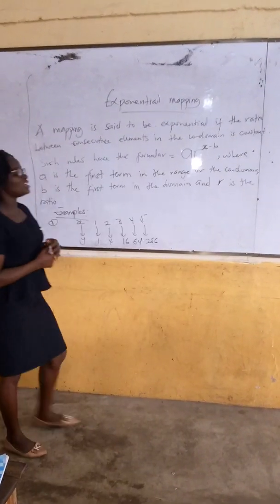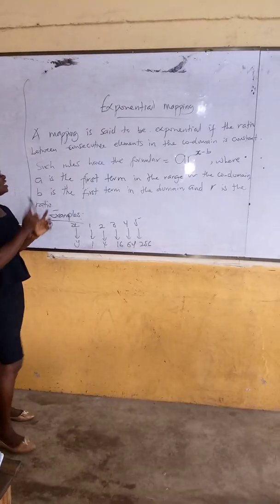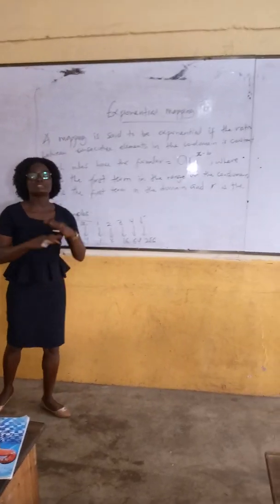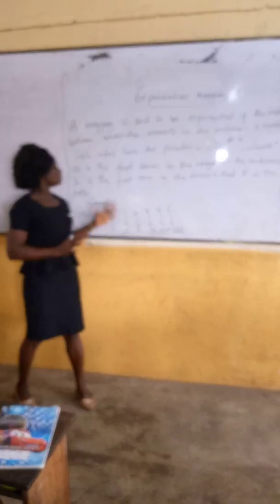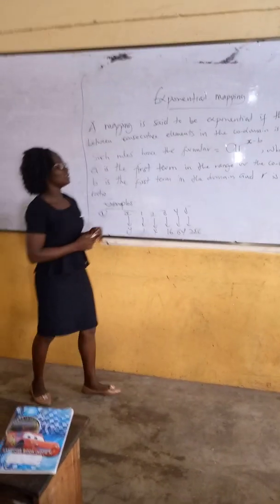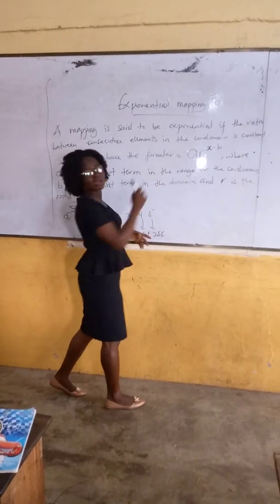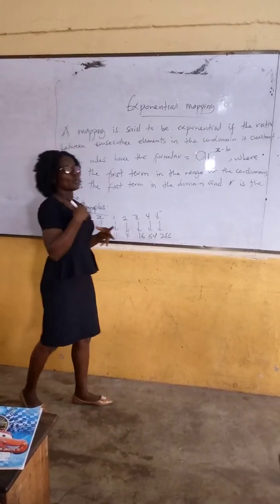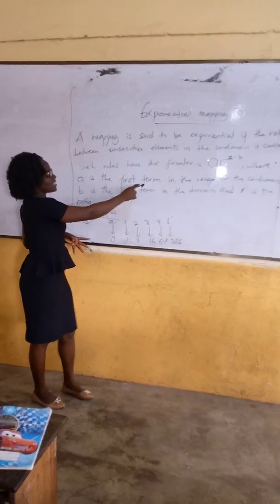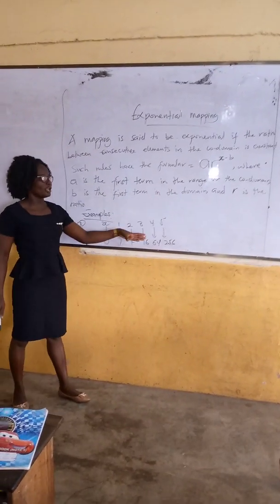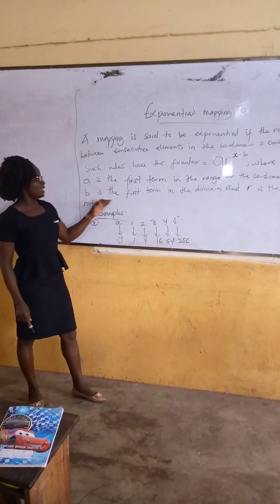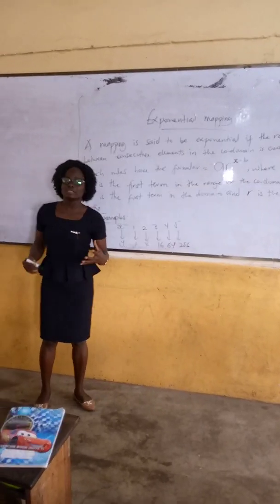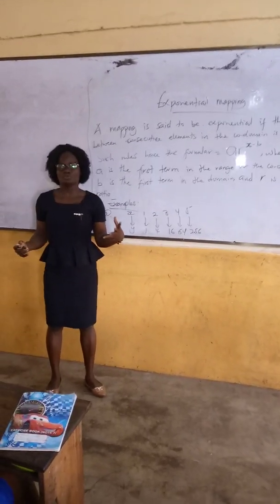Remember, we said the exponential mapping is where the ratio between consecutive elements in the co-domain is constant. Such rules have the formula ar^(x-b), where a is the first term in the range or co-domain, b is the first term in the domain, and r becomes our ratio.